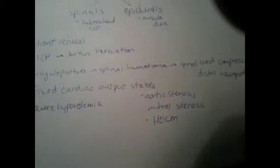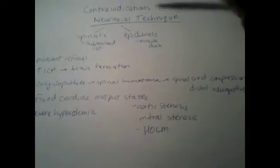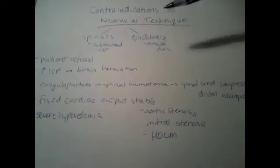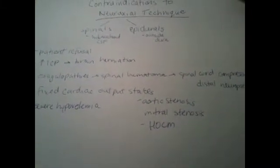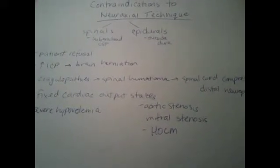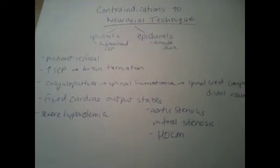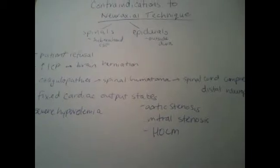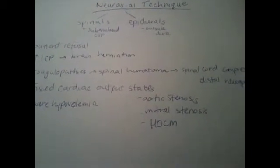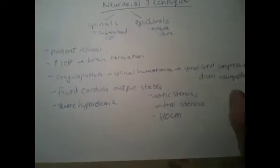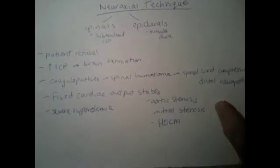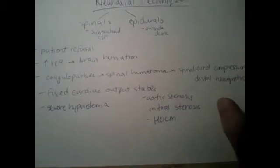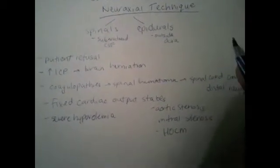The reason these are contraindicated is because the cardiac output itself is fixed. One of the main physiologic effects of spinal and epidural anesthesia is severe vasodilation and hypotension, caused by the local anesthetic having a preference to knock off sympathetic fibers. You get an unbalanced parasympathetic versus sympathetic tone, resulting in hypotension and vasodilation. In fixed cardiac output states like aortic stenosis, mitral stenosis, and HOCM, the heart cannot compensate by increasing cardiac output to counteract that vasodilation and hypotension.